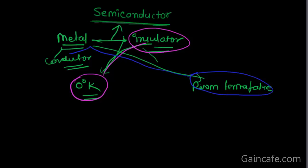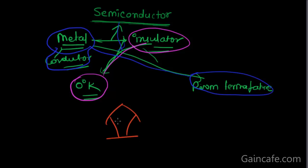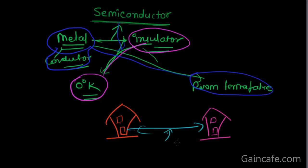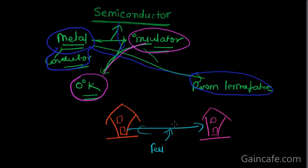At room temperature, the semiconductor behaves like a conductor. To use the friend's home analogy: your friend's home is not too near and not too far — you need a bike, but you have just enough fuel to travel from your home to your friend's home.